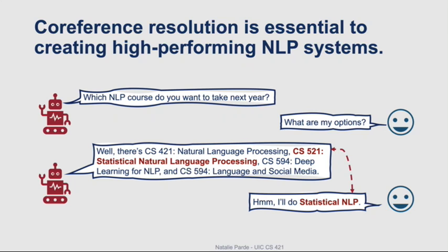Or in the example dialogue on this slide, one person might list the full official name of a CS course and the next person might respond using an abbreviated form of that name. In cases like this example, it then becomes the system's job to figure out that the two different referring expressions shown in bold are in fact referring to the same thing.